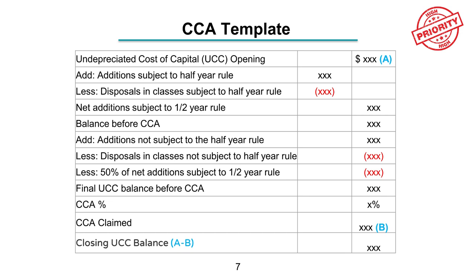Then you'll add in all the assets you bought throughout the year that are subjected to the half-year rule, and less any disposals in a class subjected to half-year rules. The net amount becomes your balance before CCA — your UCC opening balance plus all the net additions or disposals within the year subjected to the half-year rule. Then add all additions and disposals not subjected to the half-year rule, and minus out 50% of the assets subjected to the half-year rule, giving you your final UCC balance before CCA.